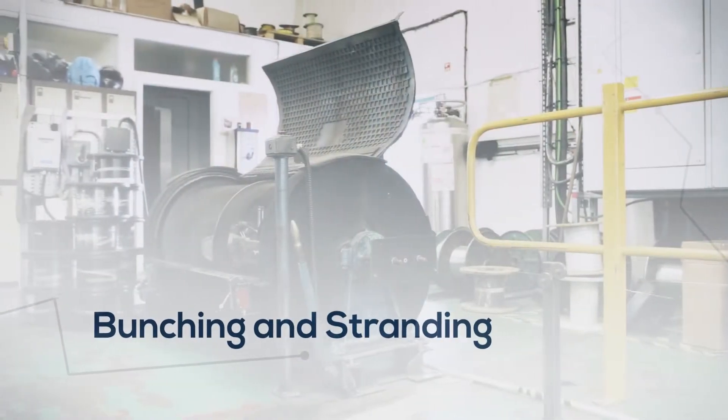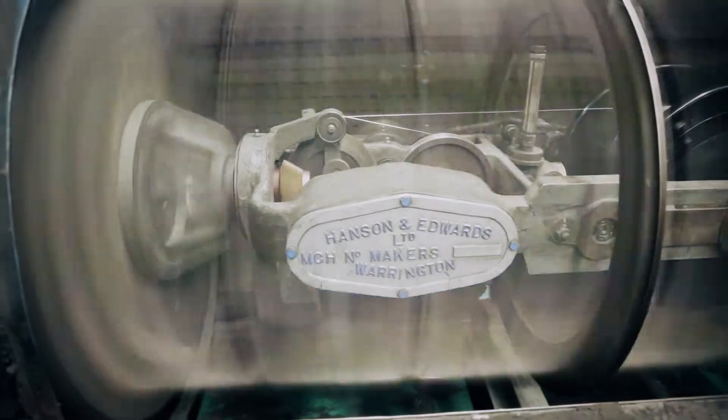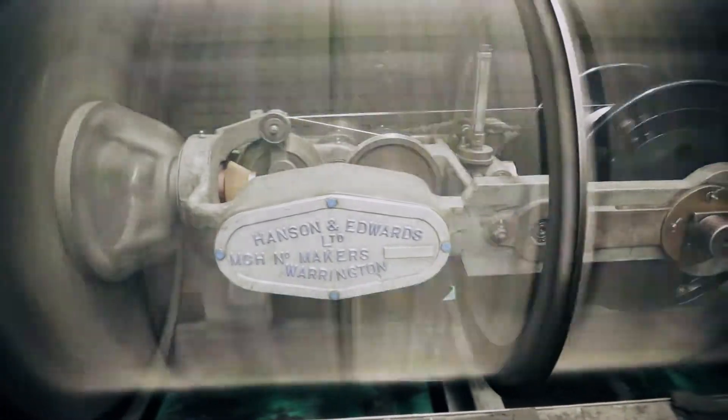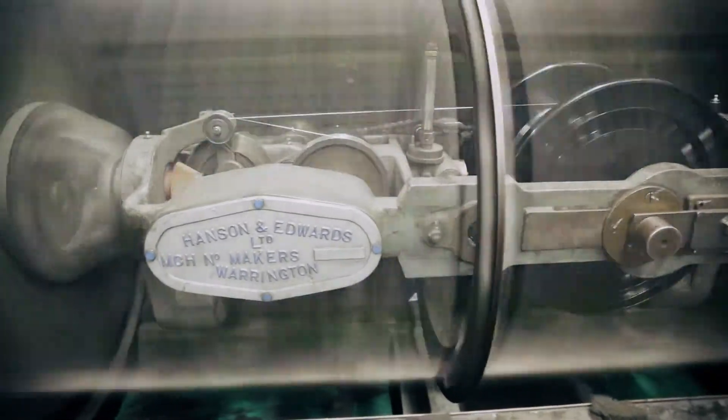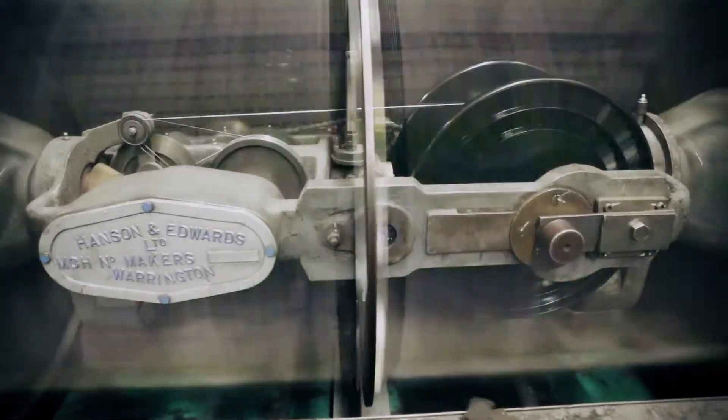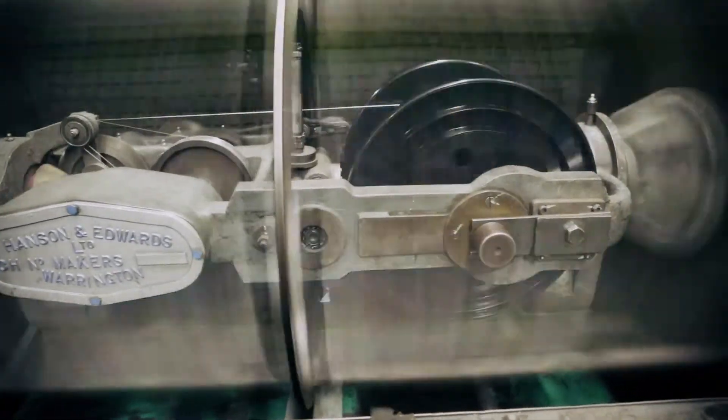At the bunching and stranding phase, the individual strands are collected together and then twisted to create a multi-strand wire. Bunching creates a non-round cross-section, while stranding creates a perfectly round cross-section.